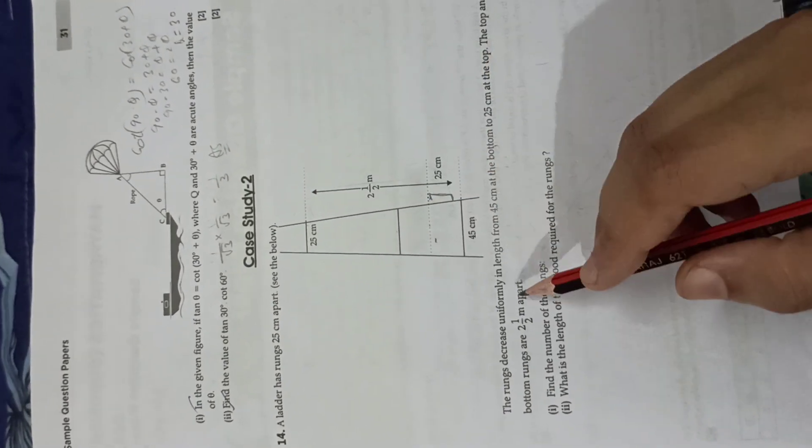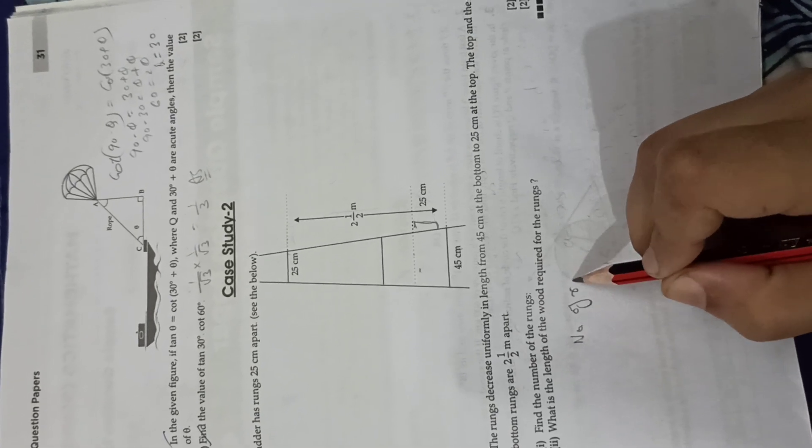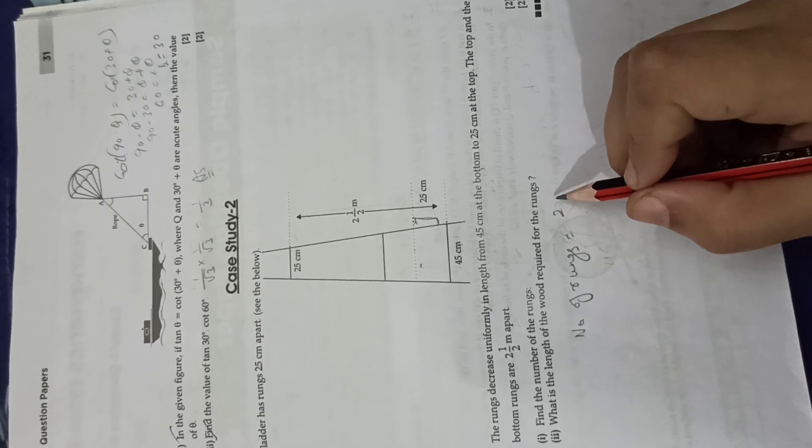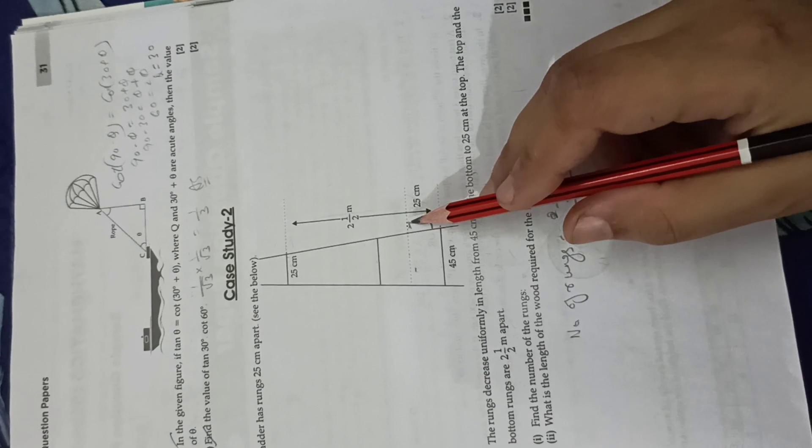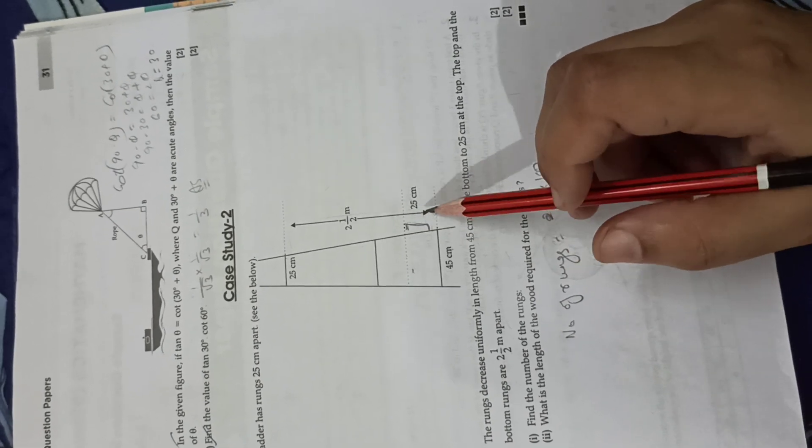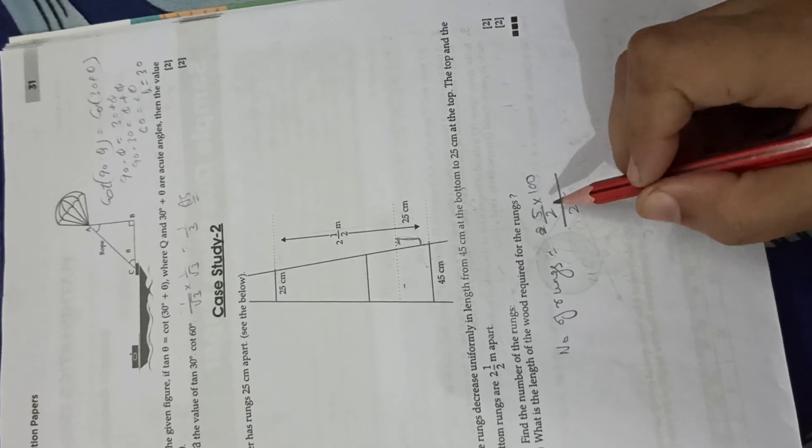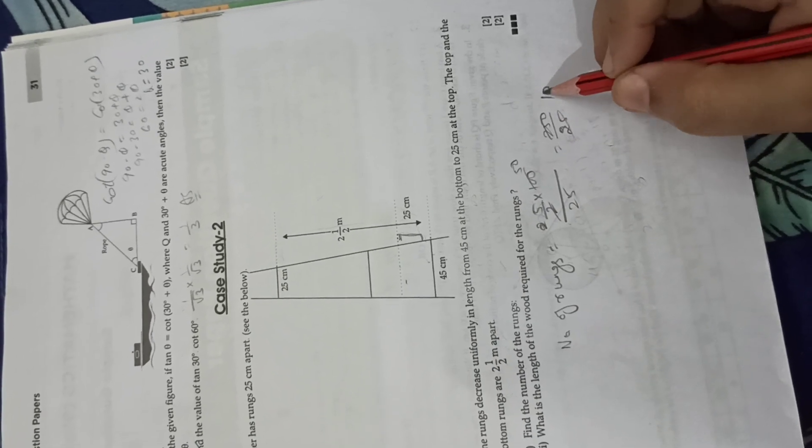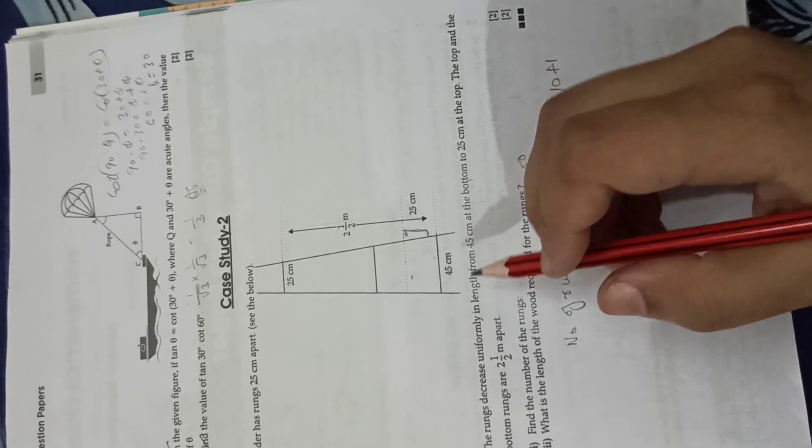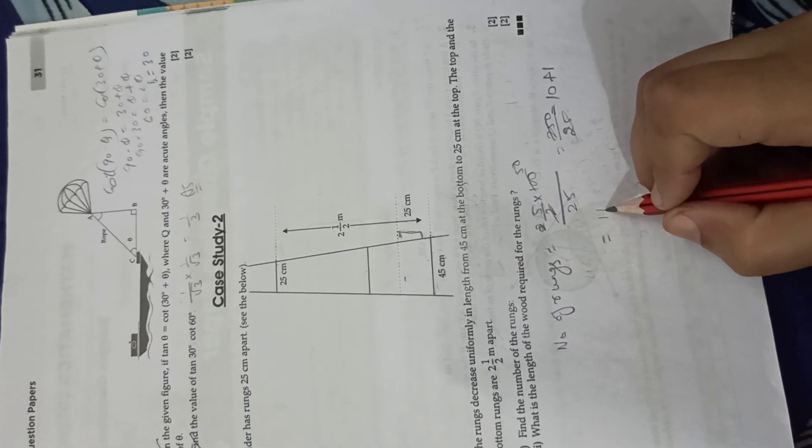We need to find out the number of rungs. The total distance is 2.5m, which is 250cm. Divide by 25cm because the rungs are 25cm apart. 250cm divided by 25cm equals 10, plus 1 equals 11. The total number of rungs is 11.